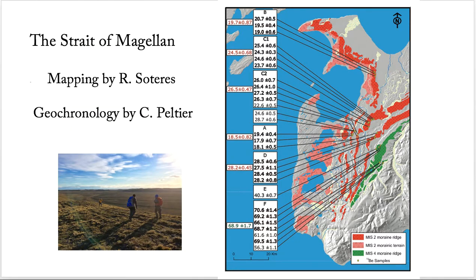Rodrigo Soteres, Hosea Rouse, and my advisor Mike Kaplan spent a week in the Strait of Magellan sampling boulders and analyzing them to create this record of glacial retreat and glacial maximums. What we found was that the glacier here advanced during a time when we didn't quite expect it to — when it doesn't seem like the big ice sheets in the northern hemisphere expanded. In the winter, when it gets too cold to work in the field in southern Chile, Rodrigo and I will work together to publish two papers on the Strait of Magellan: one more focused on the mapping and another more focused on the chronology.